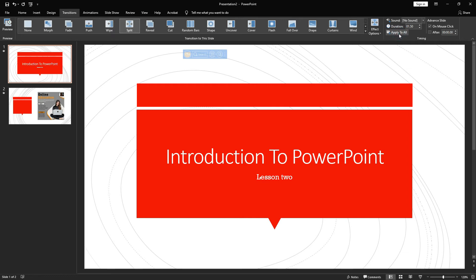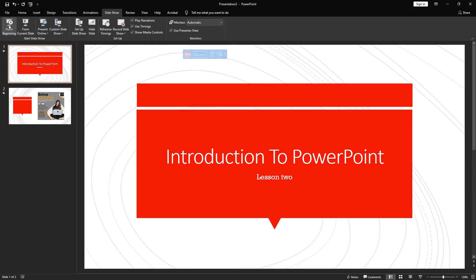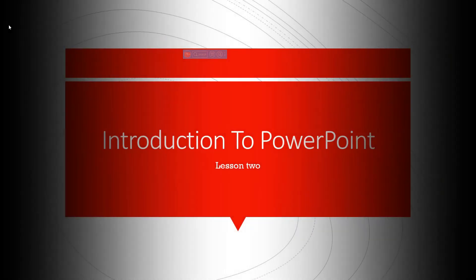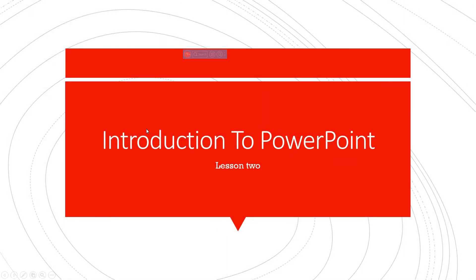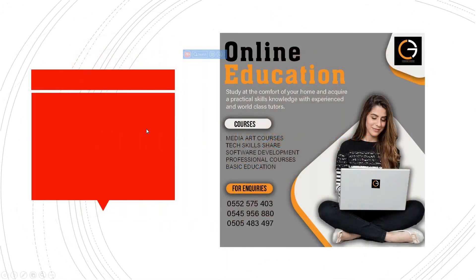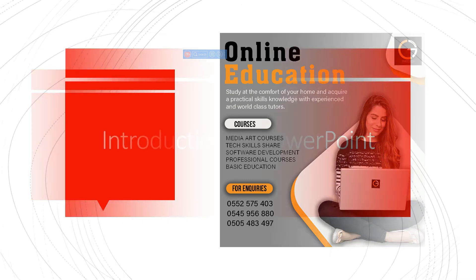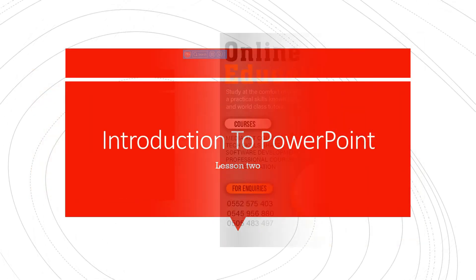Let me click 'Apply to All' and then play it to see how it looks. To play it, I'll go to the Slideshow tab and click 'From Beginning'. Now when I click the mouse the next page comes — because we set it to advance on mouse click. You can also use the navigation keys on the keyboard to navigate. We can click Escape to exit.